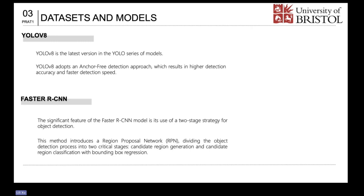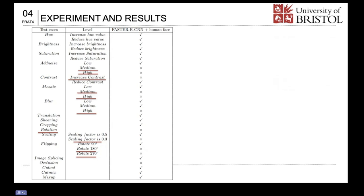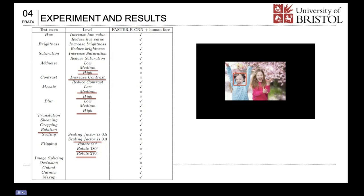When applying the test cases to the human face dataset for Faster R-CNN model predictions, the experimental results are presented in the table. In the table, a cross indicates that the model failed that specific test case. A check mark indicates that the model passed that specific test case. In the facial recognition dataset, rotation and flipping operations change the position and orientation of the faces in the image, causing the model's predicted bounding boxes to no longer accurately match the targets.